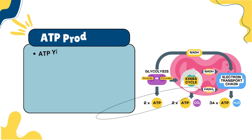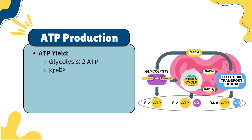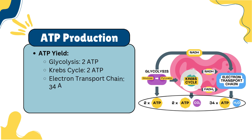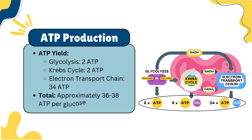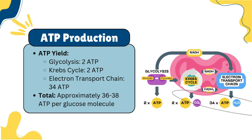When we sum up ATP production from cellular respiration, we find that glycolysis produces 2 ATP, the Krebs cycle yields another 2 ATP, and the electron transport chain contributes about 34 ATP. This totals approximately 36 to 38 ATP molecules per glucose molecule, showcasing the efficiency of aerobic respiration.